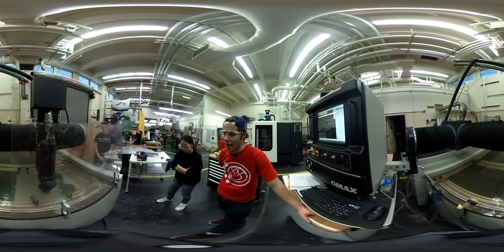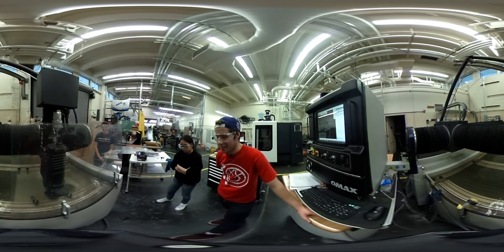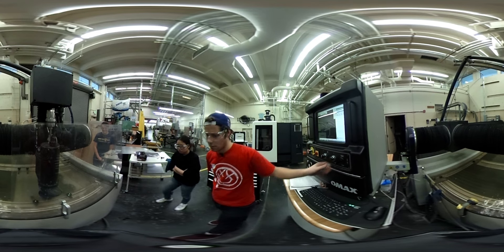The water has to be pressurized to almost 60,000 psi and along the way it's mixed with garnet, which is a gemstone that acts as an abrasive. It's controlled by the computer so you can cut out any shape you would like.